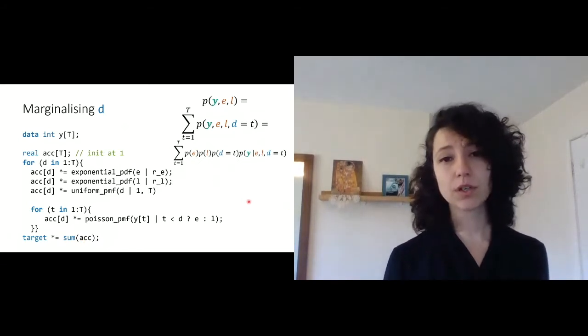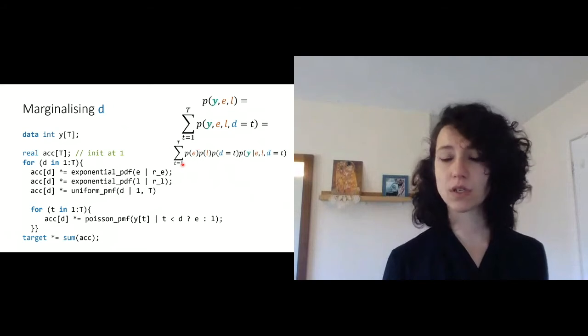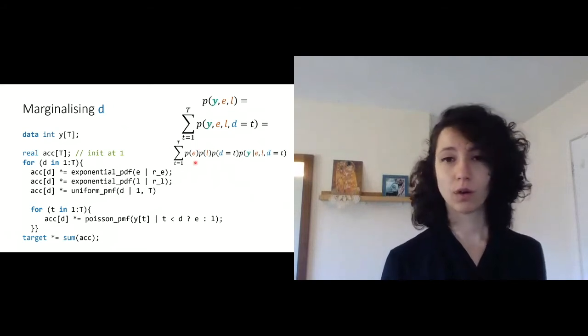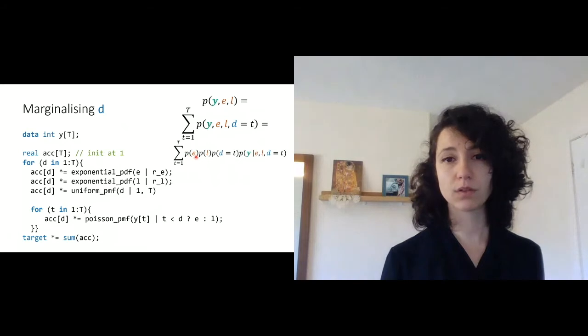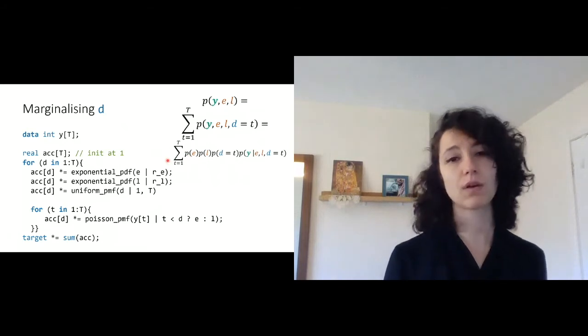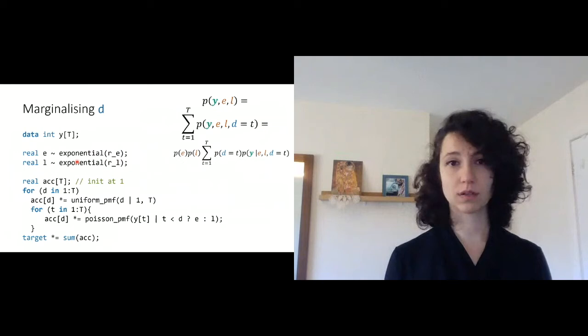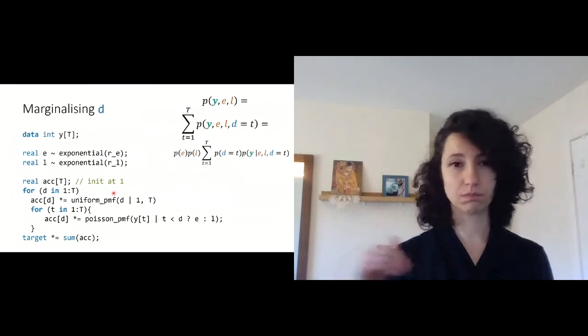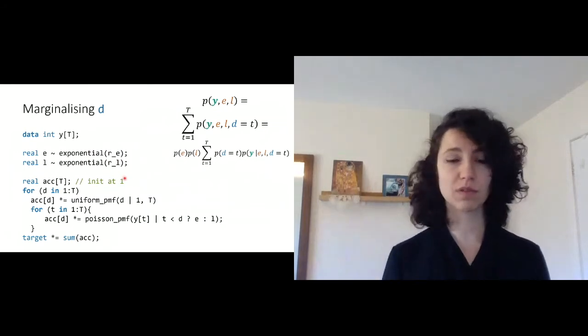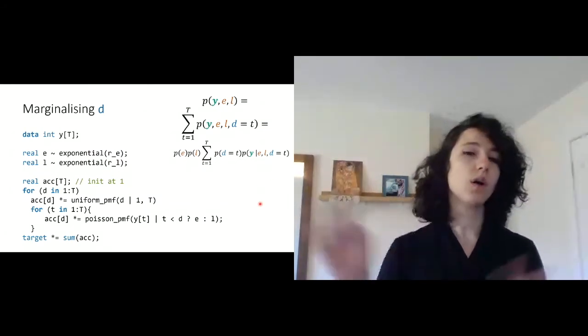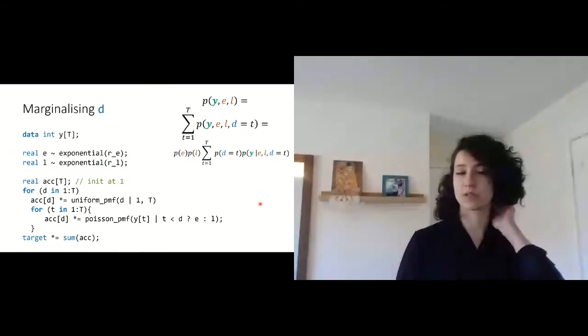And, I mean, here, you can see, like, tiny bits such as these two factors, E and L, don't really depend on D. So we can take them out of the sum. We can do that by just pushing some of the statements outside. So we can do tiny optimizations like that.